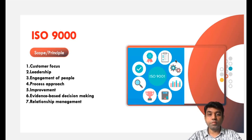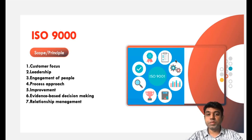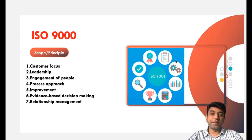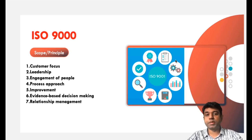Fifth is overall improvement in the organization if it is ISO certified. Sixth is evidence-based decision making — we can take advantage of past experience to inform decisions. Seventh is relationship management.